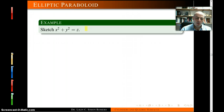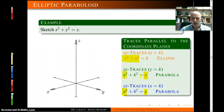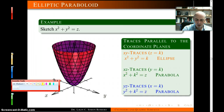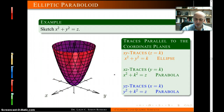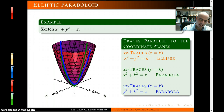Elliptic paraboloids: first notice that one variable is not raised to the square — that creates parabolic traces. When you set z equal to a constant you get an ellipse because both x and y are squared with a plus. The xz and yz traces give parabolas that both open towards the positive z-axis. Two parabolas opening in the same direction give you a bowl shape. The xz trace is a parabola opening upward, and the yz trace is also a parabola opening towards the z-axis, producing that bowl shape.